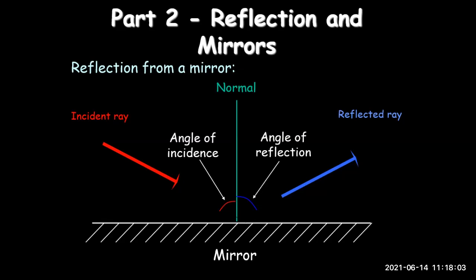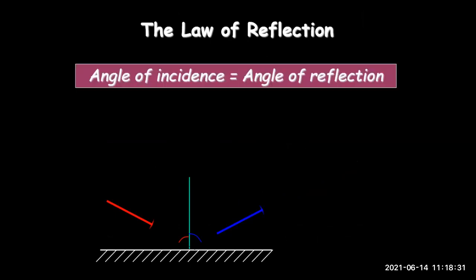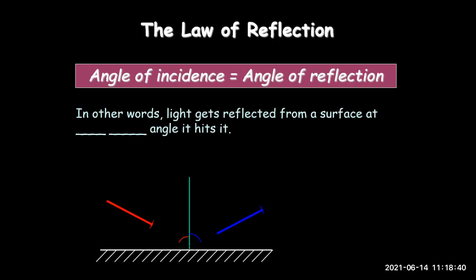In a periscope, a plane mirror is used and the angle of incidence equals the angle of reflection — that is regular reflection. The law of reflection states: the angle of incidence is equal to the angle of reflection. In other words, light reflects from a surface at the same angle it hits the surface. If the incident ray hits at 45 degrees, the reflected ray will also be at 45 degrees.